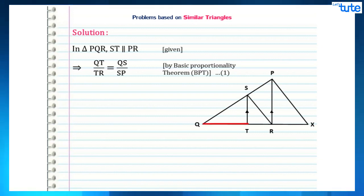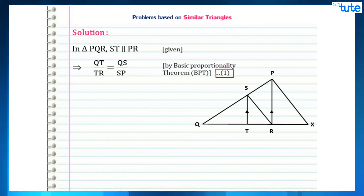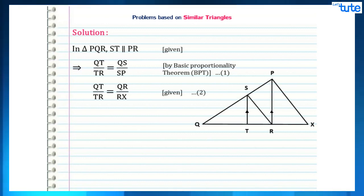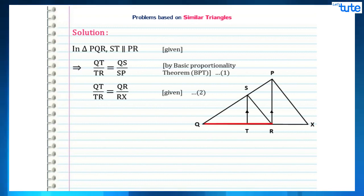In triangle PQR, as given, ST is parallel to PR. Therefore, by applying the basic proportionality theorem to this triangle, we get QT/TR = QS/SP. We will consider this as equation 1. It is also given to us that QT/TR = QR/RX. We will consider this as equation 2.